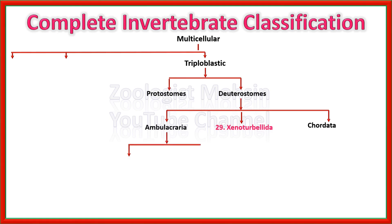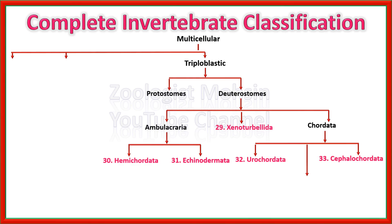Ambulacraria are further divided into two phyla: Hemichordata and Echinodermata. Please remember which phyla are Ambulacrarian. Chordates are further divided into three phyla: Urochordata, Cephalochordata, and Vertebrata. All of these — Hemichordates, Echinoderms, Urochordates, Cephalochordates, Vertebrates, and Xenoturbellida — are coelomate and have a complete true body cavity.